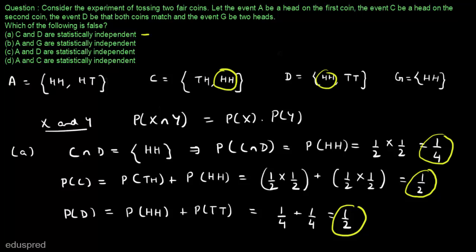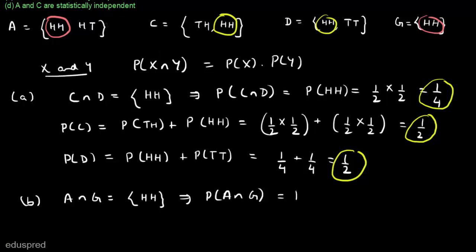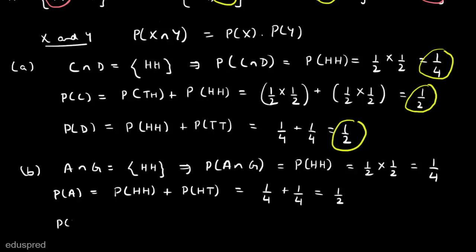In part B, we have to check if A and G are statistically independent. A ∩ G = {HH}, so P(A ∩ G) = P(HH) = 1/2 × 1/2 = 1/4. P(A) = P(HH) + P(HT) = 1/4 + 1/4 = 1/2. P(G) = P(HH) = 1/2 × 1/2 = 1/4.